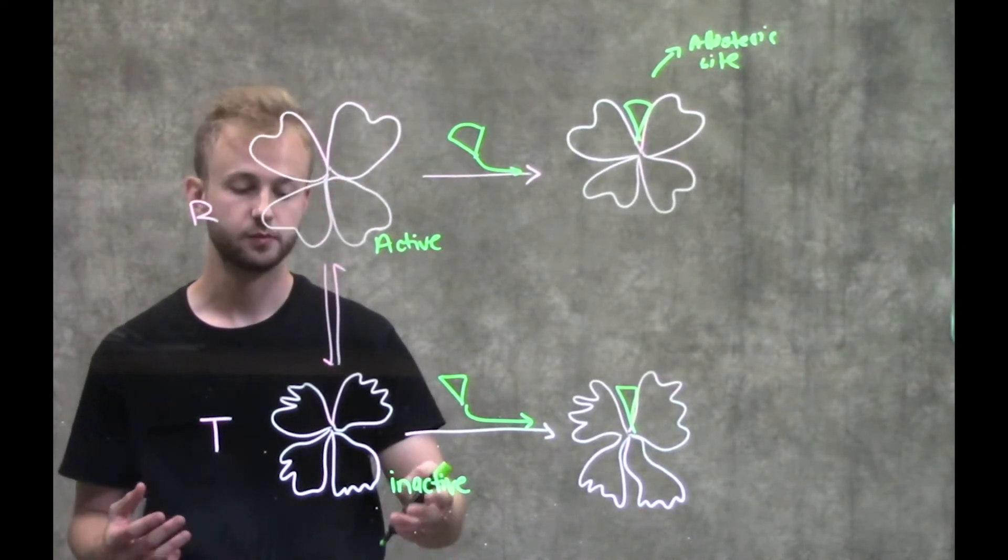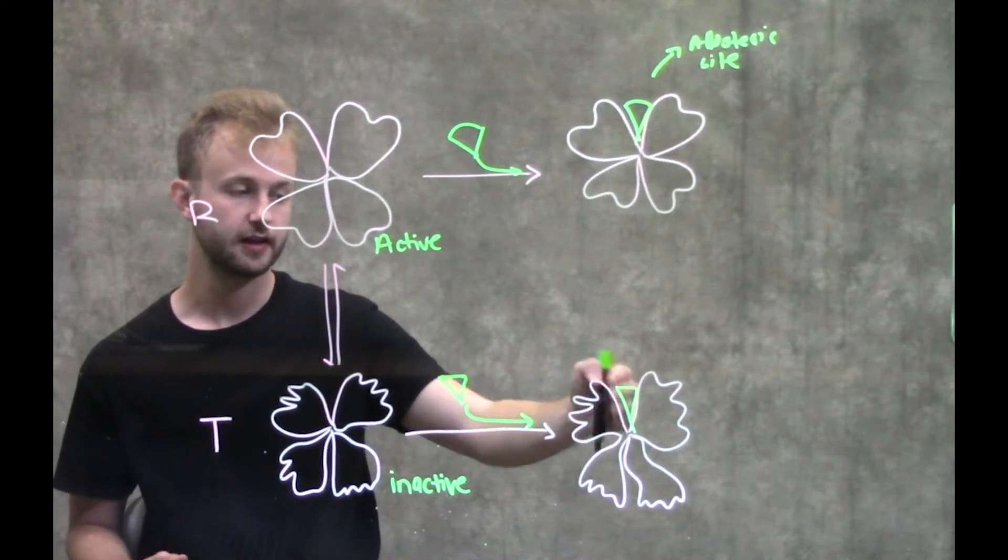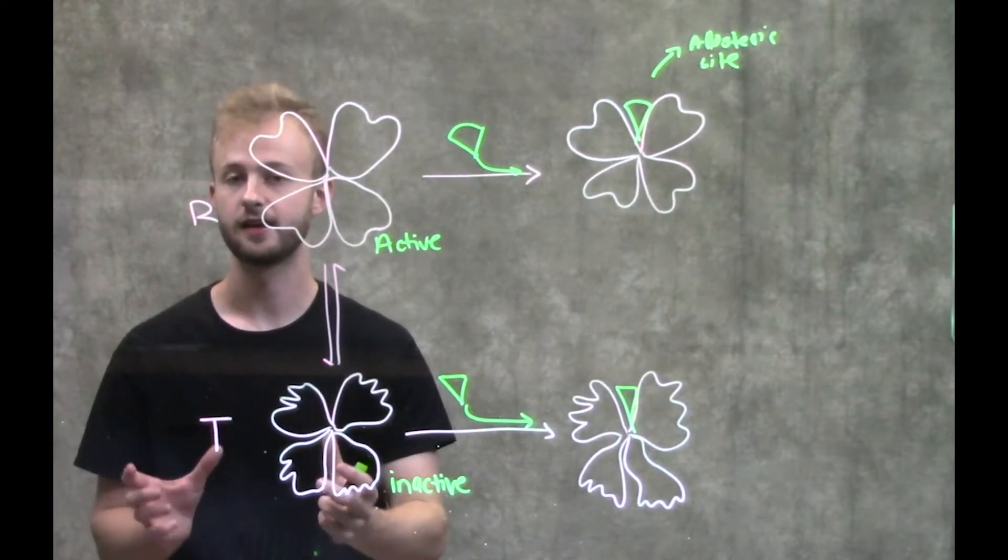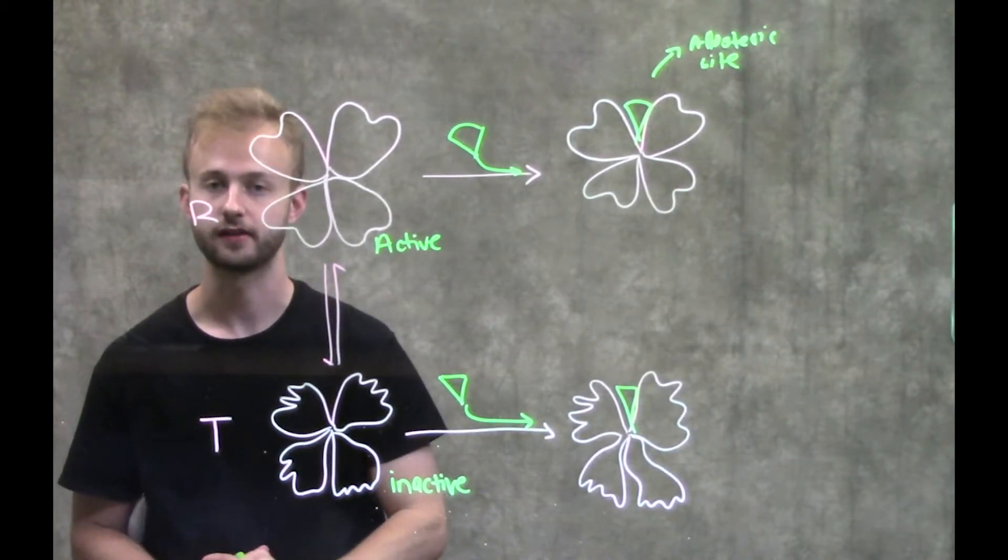In allosteric inhibition, we have our tense state. We'll have our allosteric inhibitor bind to the allosteric site, which is going to lock that enzyme into the T state and prevent it from being able to convert substrates to products.